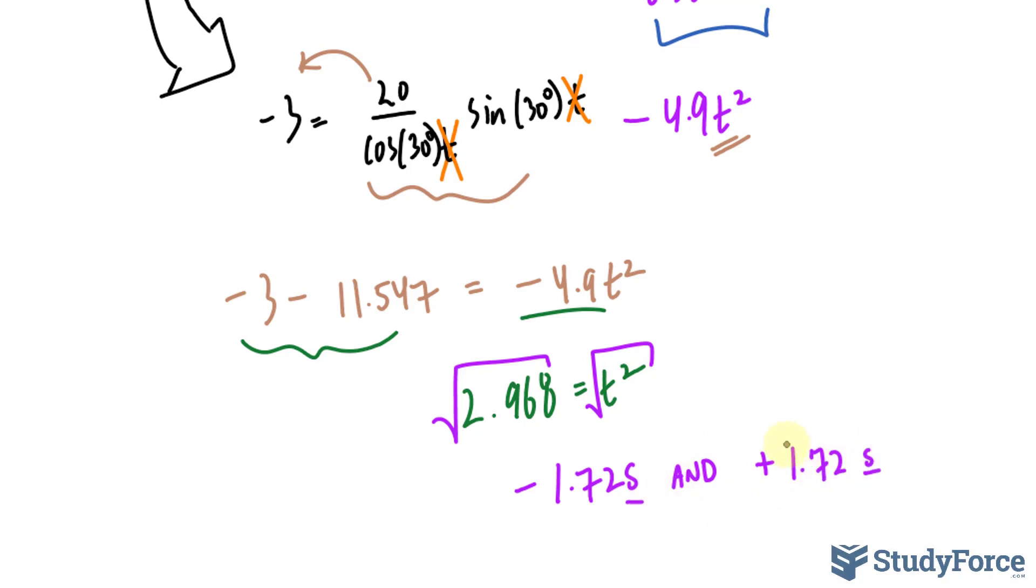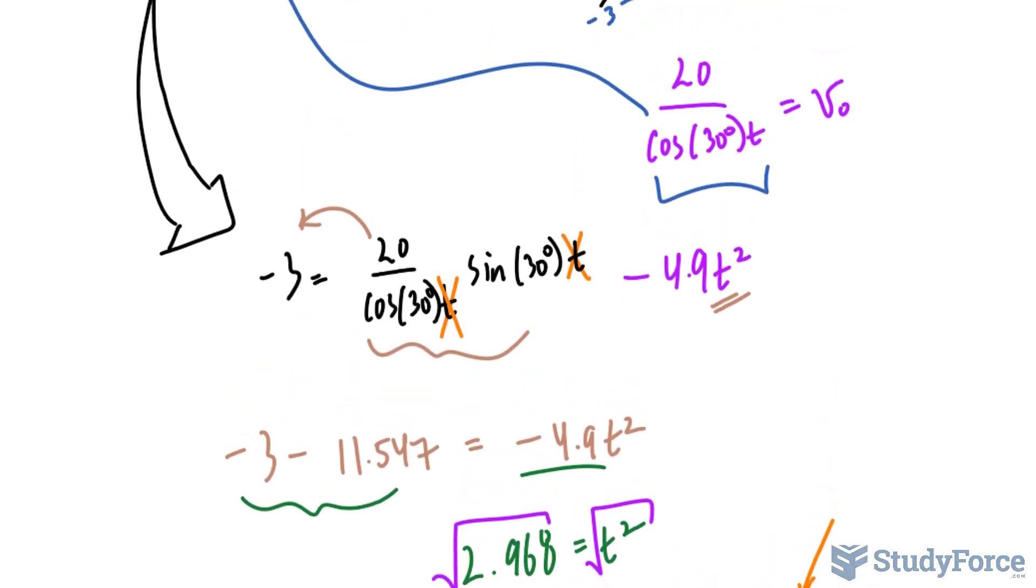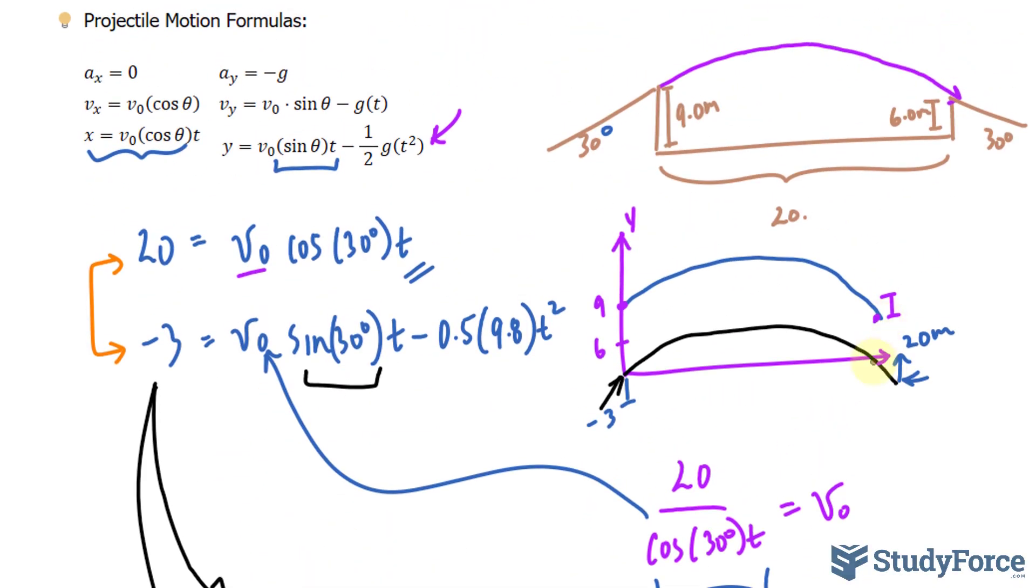Of course, we will choose the positive version because the negative does not make sense in terms of the context of the question. So it takes positive 1.72 seconds to reach this point of the parabola.